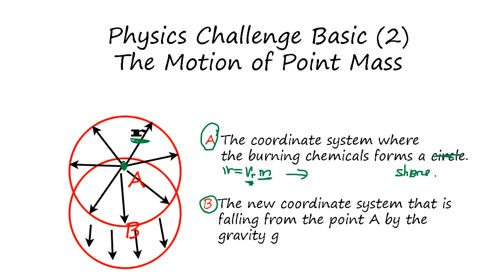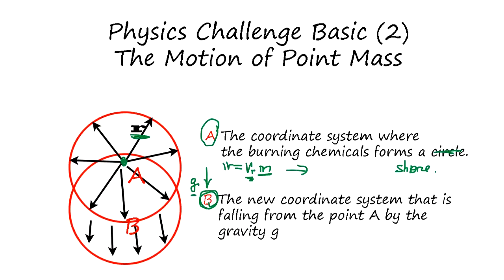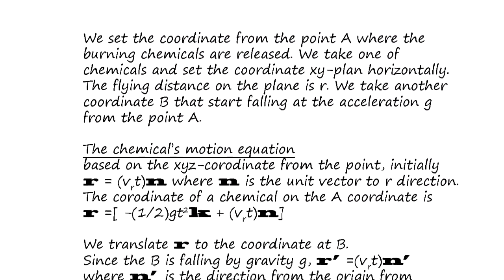We use the new coordinate system B which is falling from A at the acceleration g. So using this we can show that the firework's shape is maintained while it's falling by gravity.